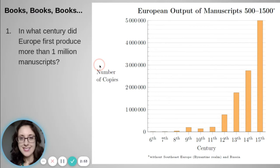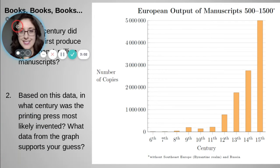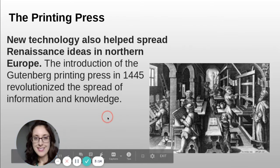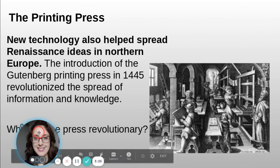Books, books, and books! What century did Europe first produce more than one million manuscripts? Based on this data, in what century was the printing press most likely invented? What data from the graph supports your guess? New technology also helped spread Renaissance ideas in Northern Europe. The introduction of the Gutenberg printing press in 1445 revolutionized the spread of information and knowledge.